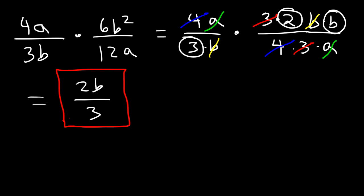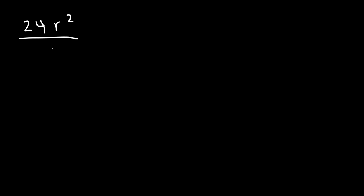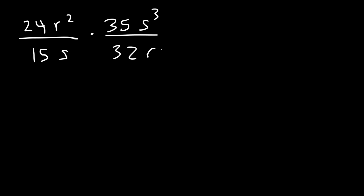When multiplying algebraic fractions that contain variables, it's helpful to factor — you want to factor every variable apart and then cancel. Here's another similar example for practice: 24r squared divided by 15s multiplied by 35s cubed over 32r. Take a minute, pause the video, and work on that problem.